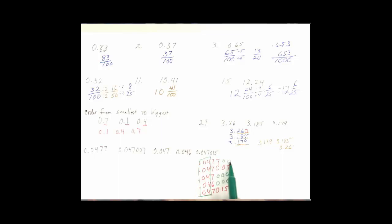I've got 7,700, I've got 7,007, 7,000, 6,000, and 7,015. So then as we're ordering, obviously the 6 is going to come first,